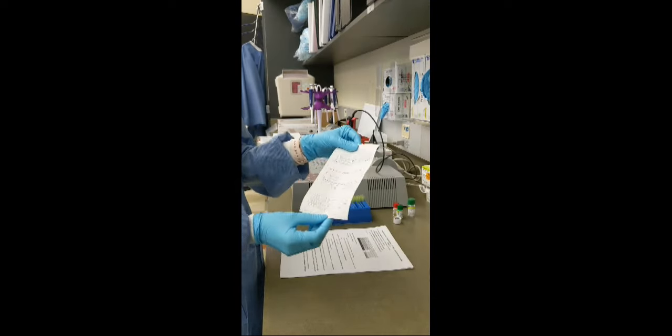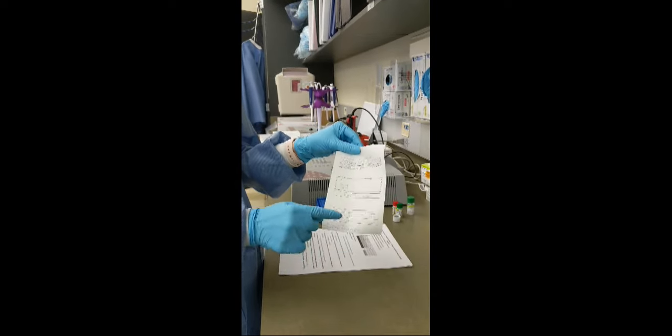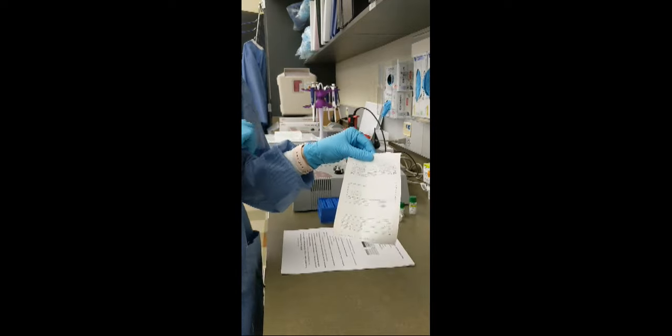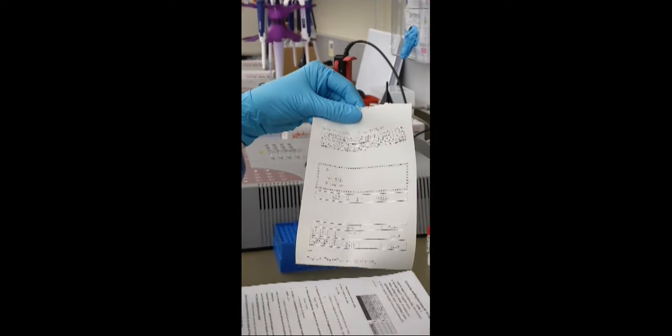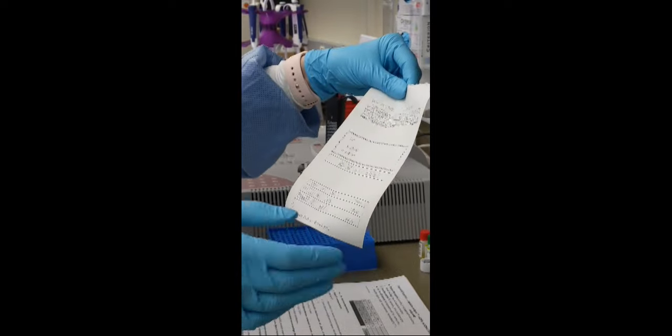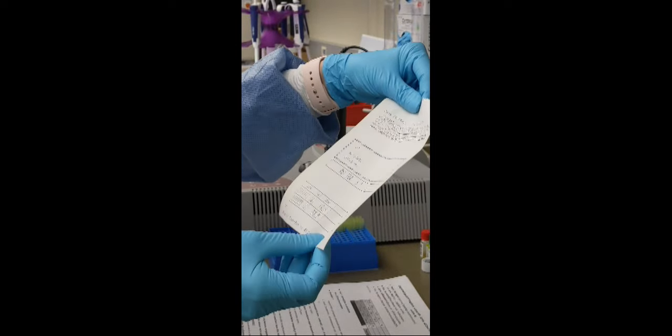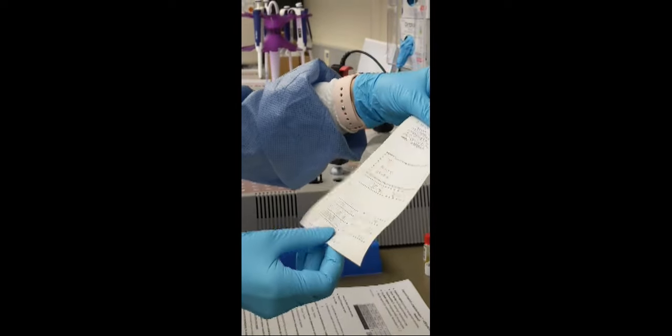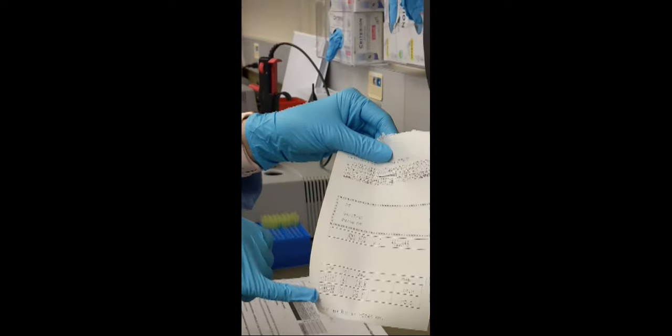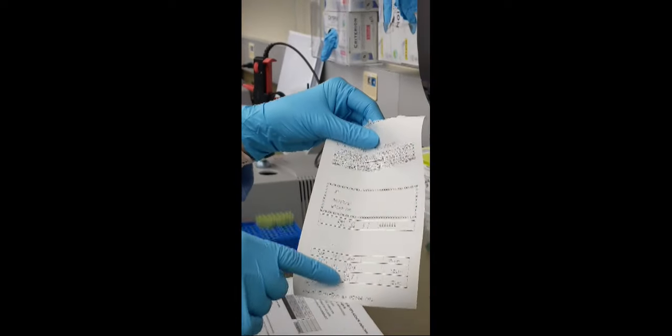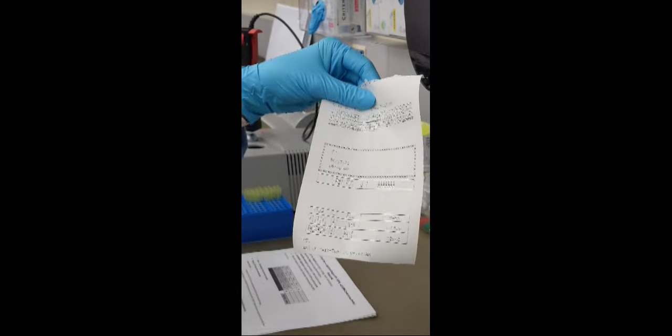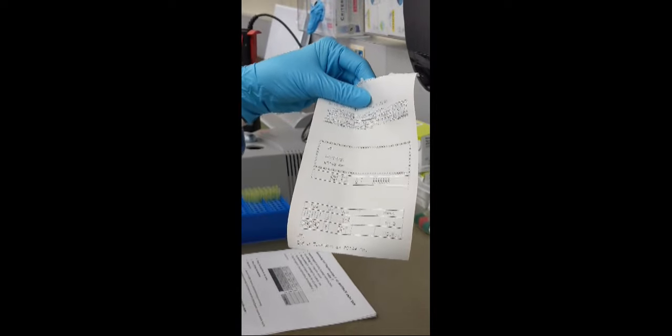So when the analyzer is done, it'll print out your results. Right here, if there are stars there, then that means that we have to rerun the test. The pipette was not done quickly enough, so your results aren't valid. But each patient is right here listed, the PT time, and then whether or not you have to redo it again.